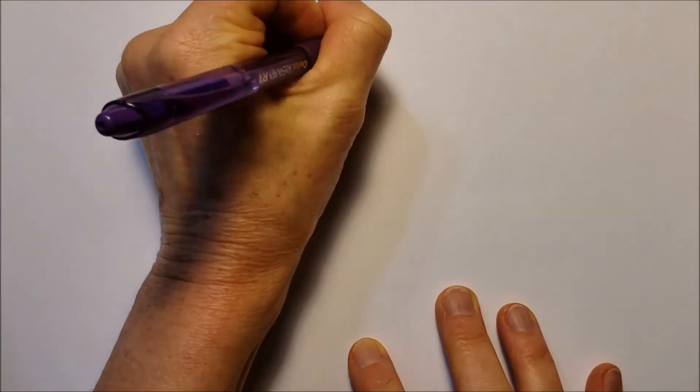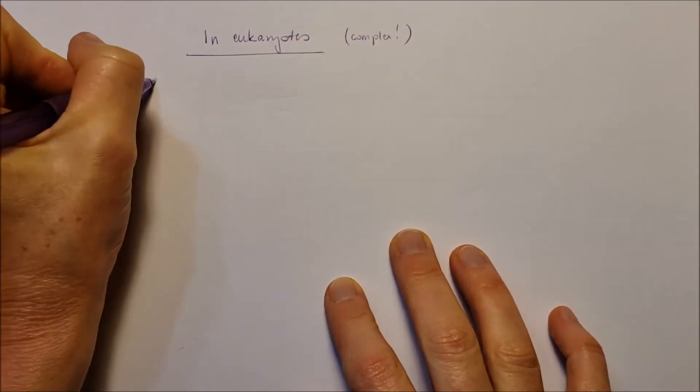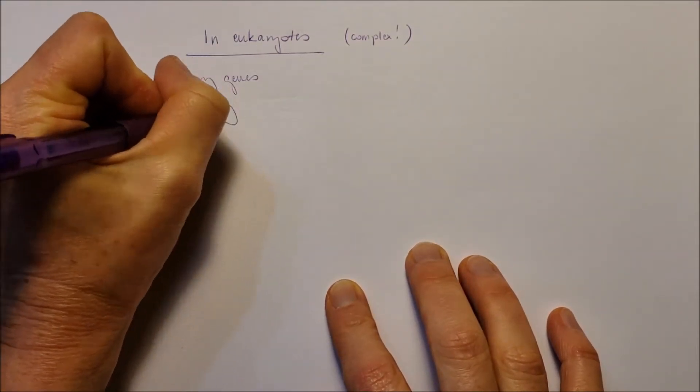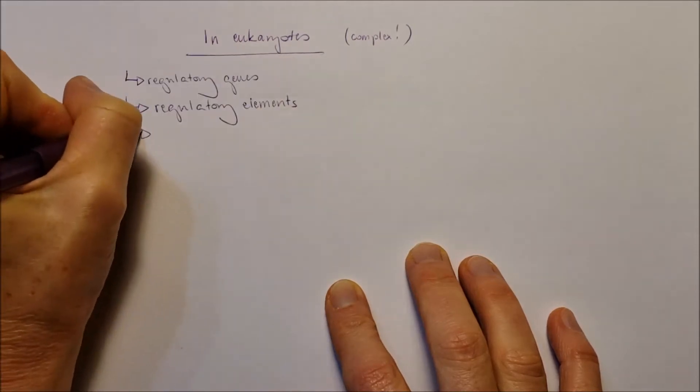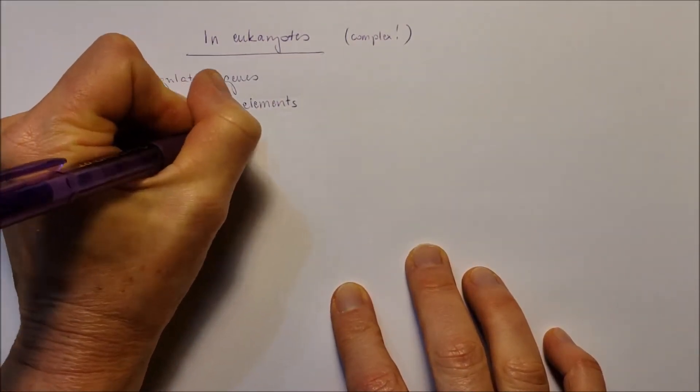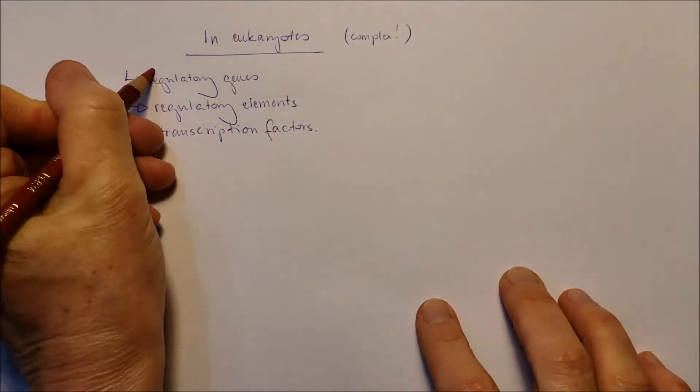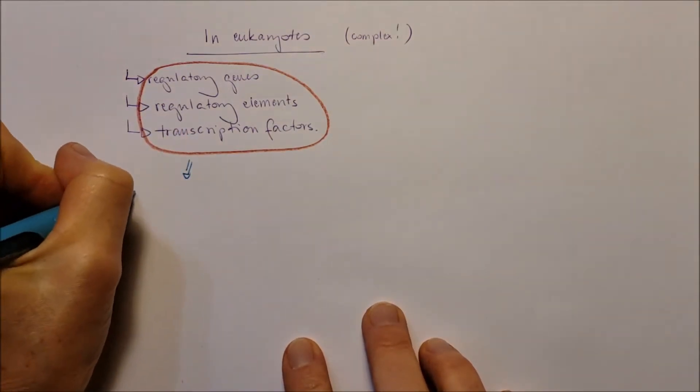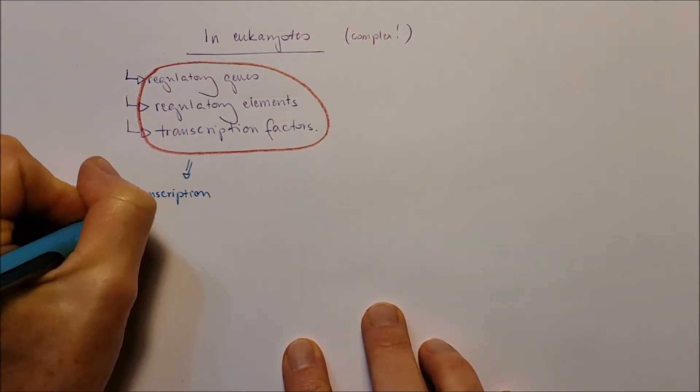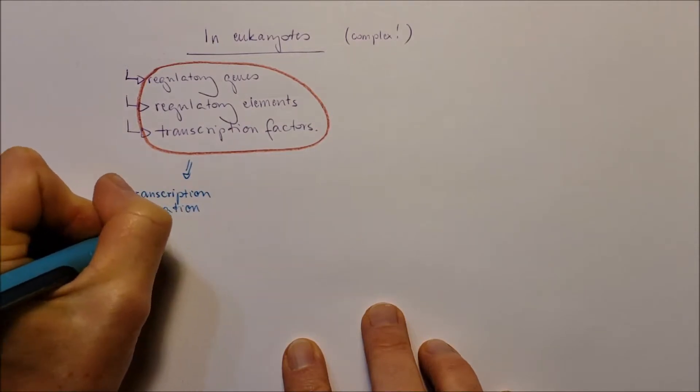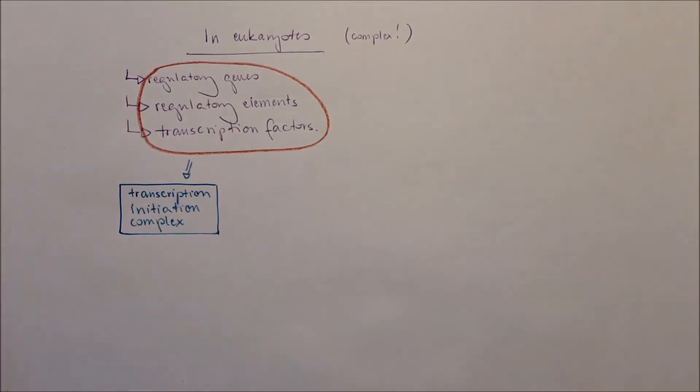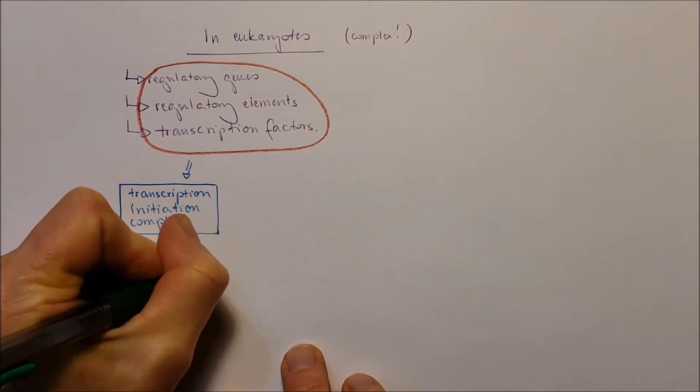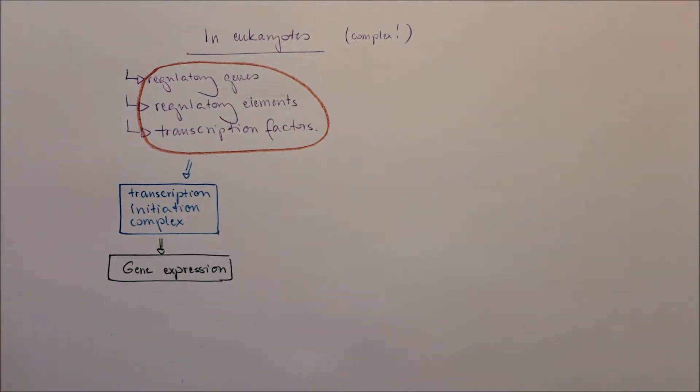Now, in eukaryotes, it's way more complex. Whatever we just talked about, that was the prokaryotes. In eukaryotes, there are regulatory genes, regulatory elements, as well as transcription factors. All three of them are going to form on the DNA a transcription initiation complex. And this initiation complex is going to let the gene be expressed. So, gene expression will happen. But it's multifactorial, it's not only one.